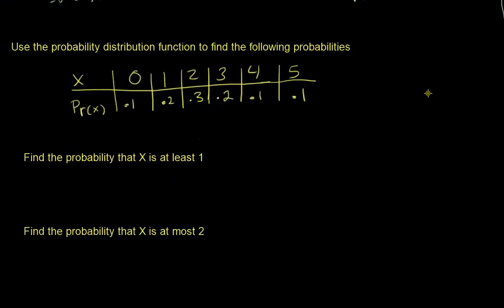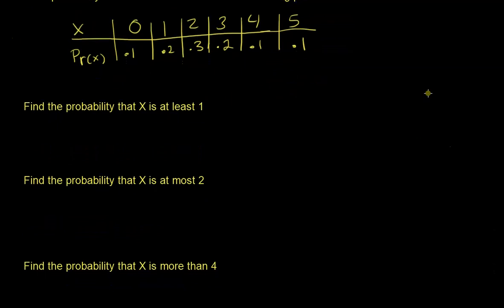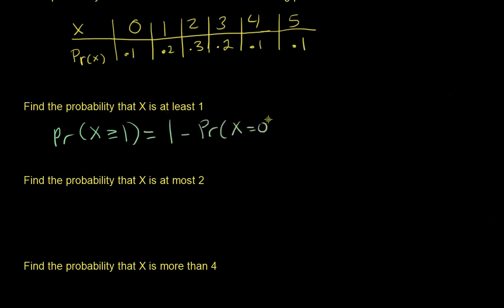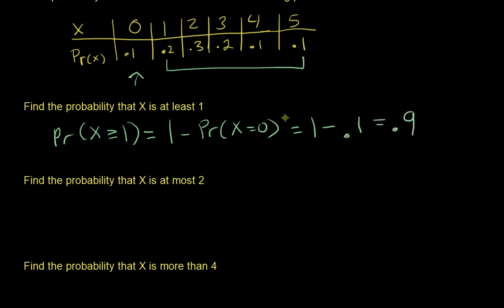Here we have a probability distribution table. Find the probability that X is at least one — that's P(X ≥ 1). The easiest approach with a larger table is the complement: 1 minus P(X=0) = 1 minus 0.1 = 0.9.